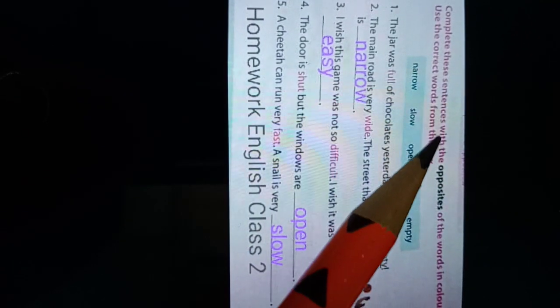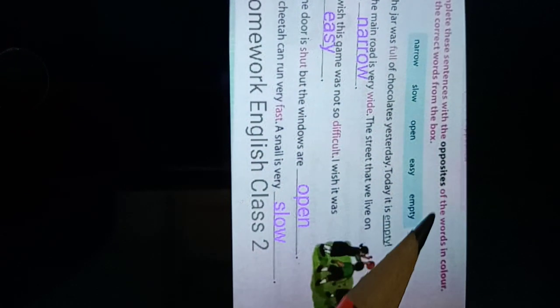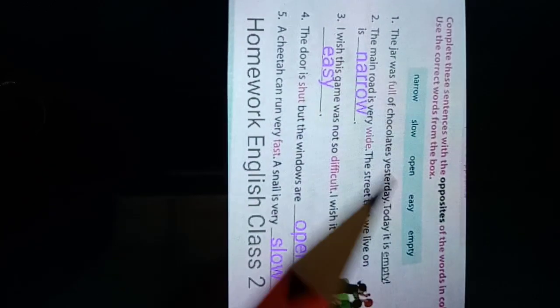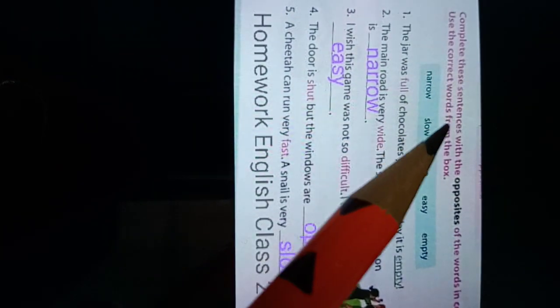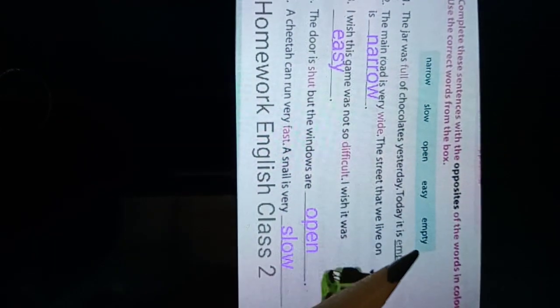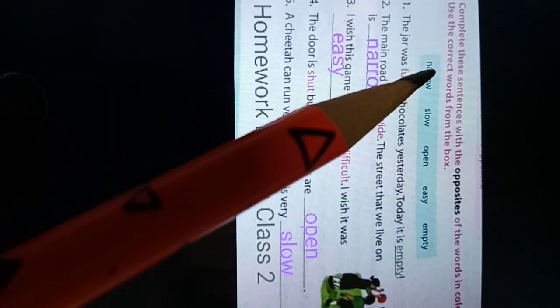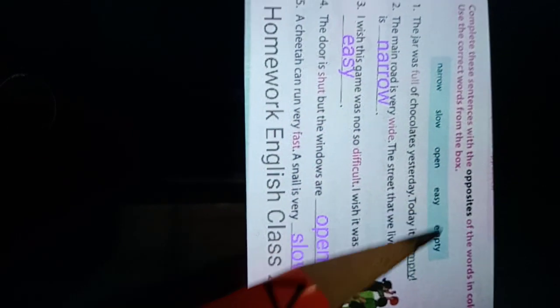So complete these sentences with opposites. The words of color, use the correct words from the box. The box has narrow, slow, open, easy, empty.